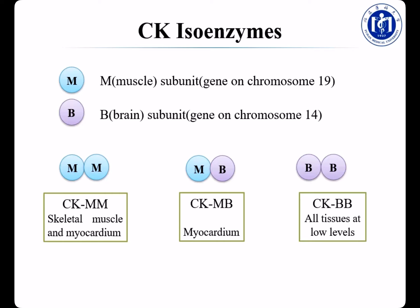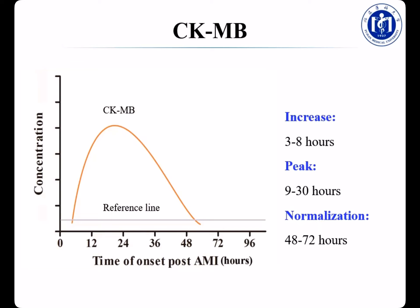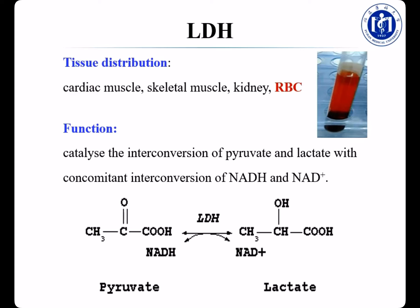CK consists of two subunits: M and B. This enables three possible isoenzymes — CKMM, CKMB, and CKBB. CKMM is mainly expressed in skeletal muscles and myocardium. CKBB is found in nearly all tissues at low levels. The most specific isoenzyme for cardiac disease is CKMB. Its reference interval is less than 5% of total CK by electrophoresis, or less than 50 U/L by immunoinhibition; the normal range for CKMB mass is less than 5 µg/L. Increased CKMB is observed in AMI, myocardial injury, myopathies, and surgery. For AMI, CKMB begins to rise 3–8 hours after onset, reaches peak 9–30 hours, and falls to normal range 2–3 days after infarction.